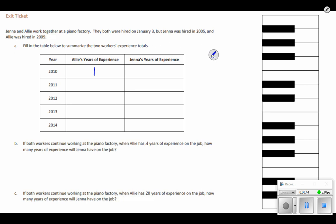Jenna was hired in 2005. So in 2010, Jenna would have five years experience. So as our years go up one, Allie is going to have one year, two years experience, three, four, five years of experience.